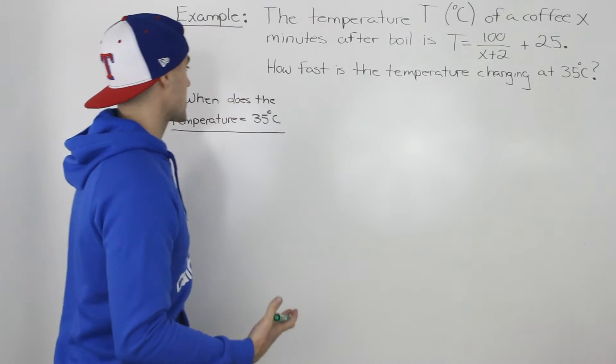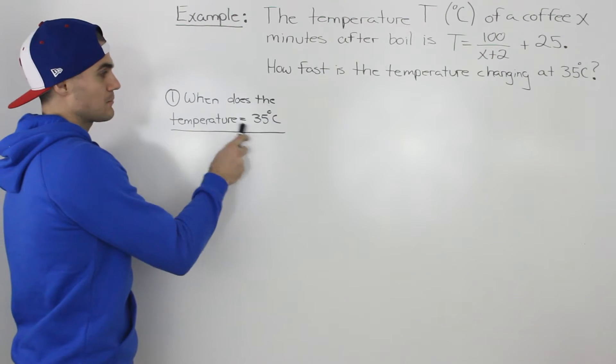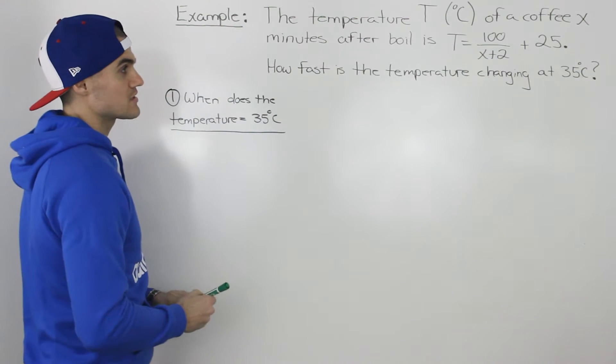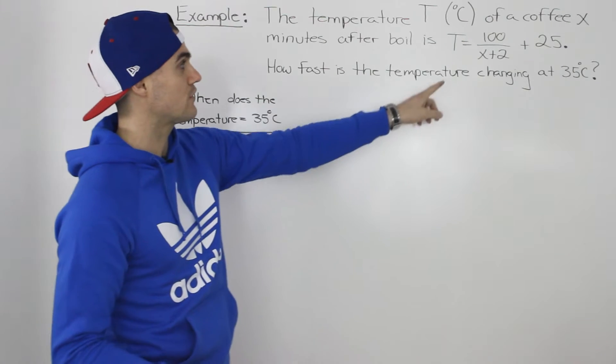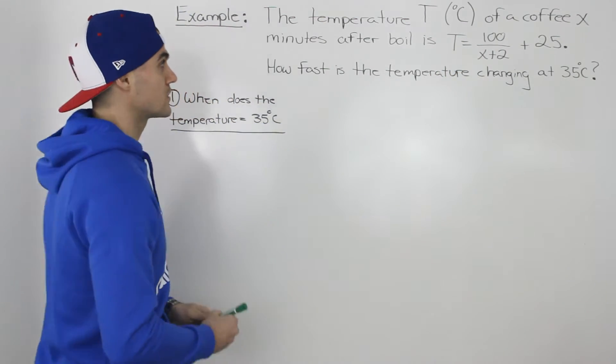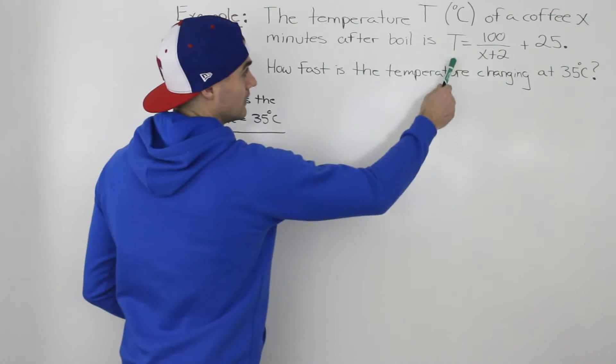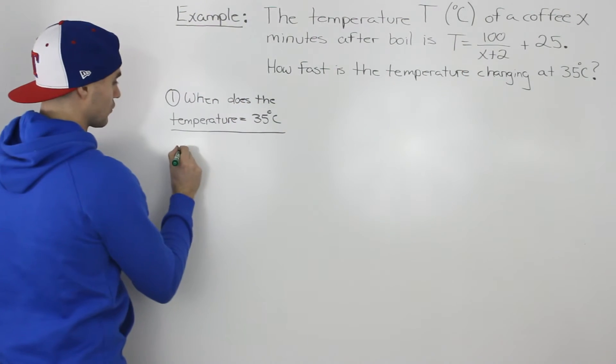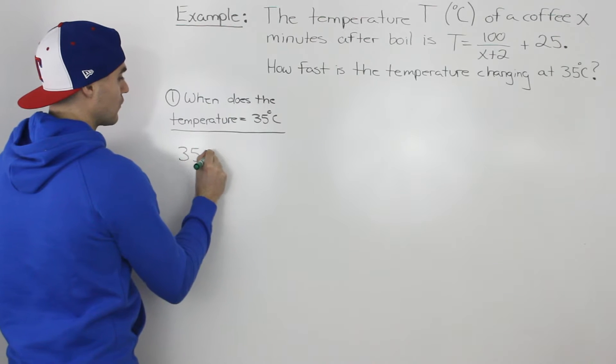So the first step is we have to figure out when does the temperature equal 35 degrees Celsius for the coffee. So we have to find after how many minutes after the boil does it hit 35 degrees Celsius, and the way we would do that is we would make the T equal to 35 and then solve for x.